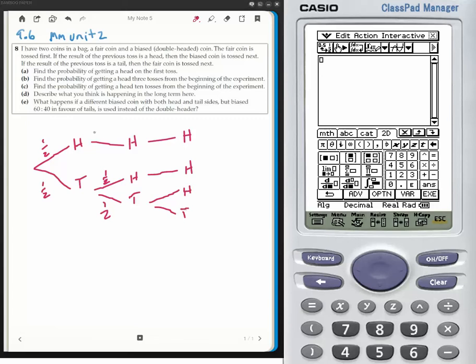This is a half times one times one, that gives me a half. This is a half times a half times one, that gives me a quarter. This is a half times a half times a half, that gives me one eighth.